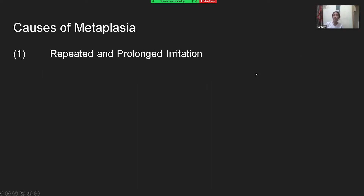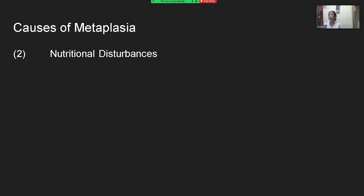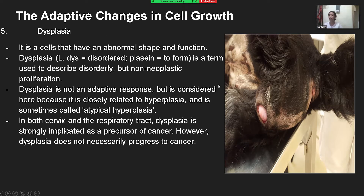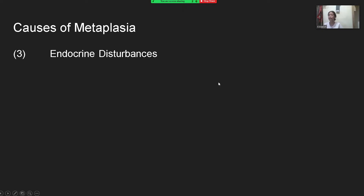Some examples of why metaplasia occurs are due to repeated and prolonged irritation, nutritional disturbances, and endocrine disturbances. Metaplasia occurs as a fully reversible adaptive response to chronic persistent injury.